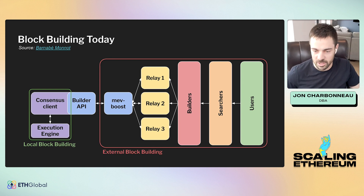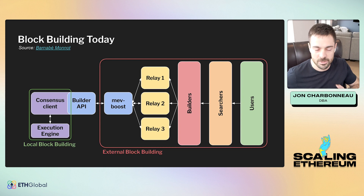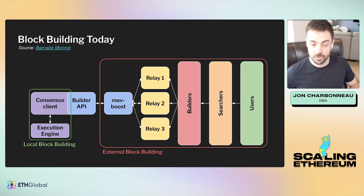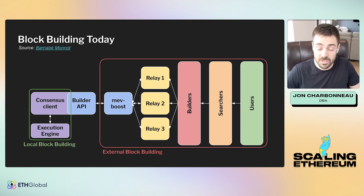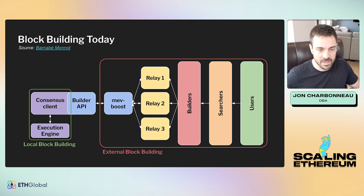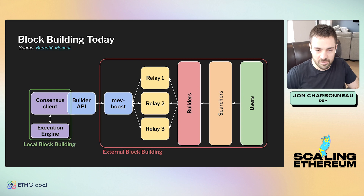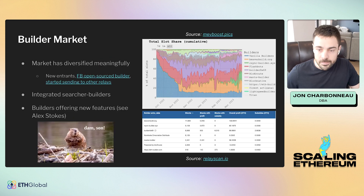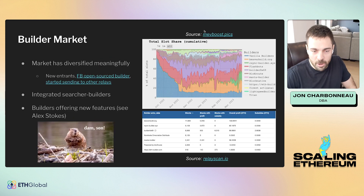In the broad transaction supply chain, users submit transactions, searchers will take a lot of those transactions and make specific bundles, they send them to builders, those go through relays, and eventually validators will take those blocks that builders make for them and propose those to the network. This kind of separates the specialized task of actually building blocks so that validators can have permissionless access to MEV without having centralizing pressures of needing to be sophisticated actors.